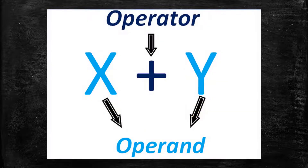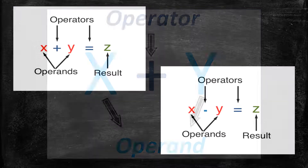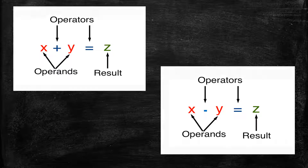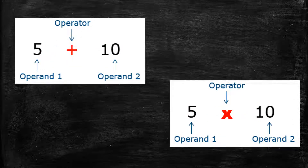In the following diagram, the plus sign is the operator and x and y are the operands. It will add the values of x and y and give their sum. In another example, plus and minus are operators, x and y are operands, and z is the result that stores the value of the expression. For instance, 5 and 10 are operands: 5 plus 10 equals 15, and 5 multiplied by 10 equals 50.